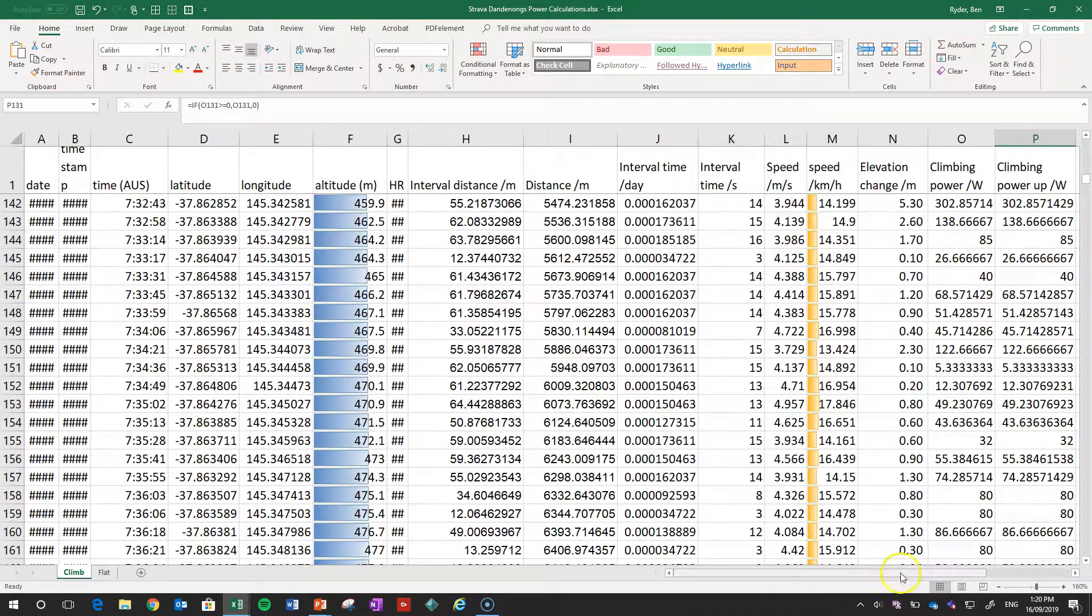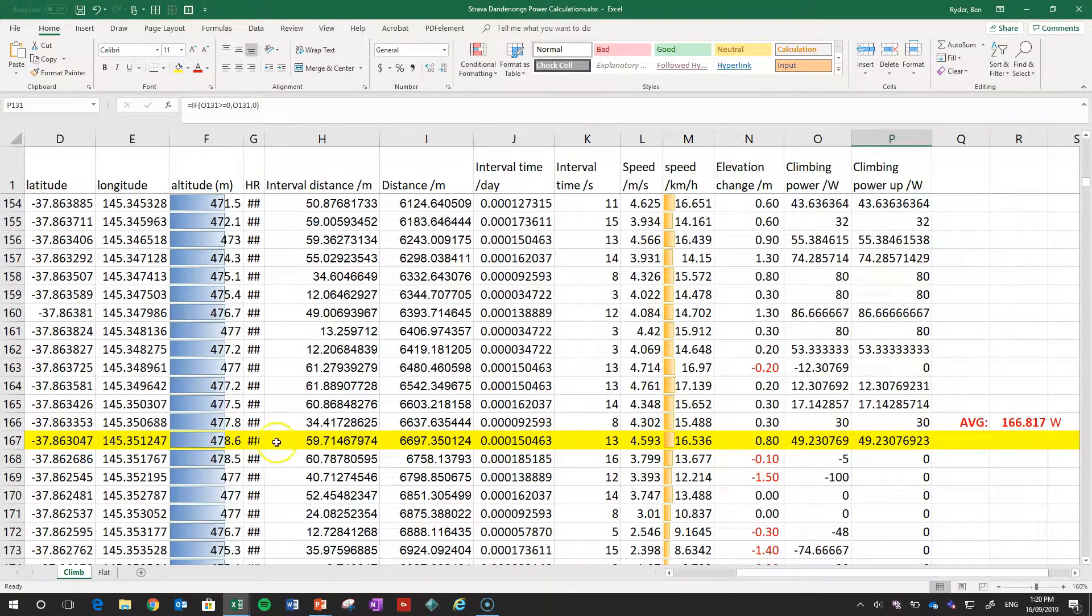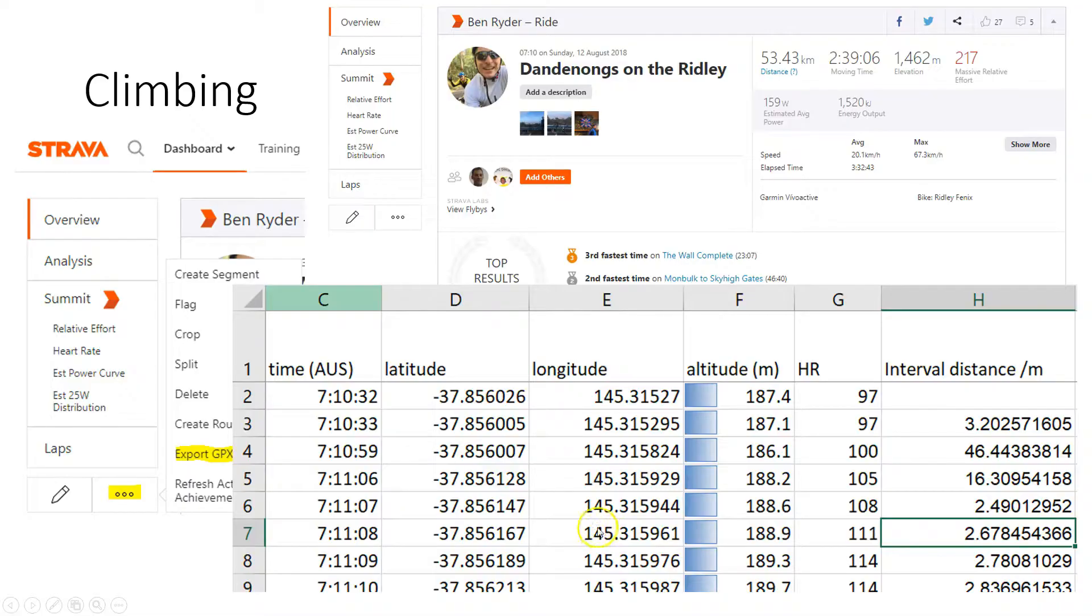So I've added up all those data up until the time when I reached the top of the hill and then that averaged out to 167 watts so that is just an average of my climbing up power for that whole column. Let's switch back to the presentation view.